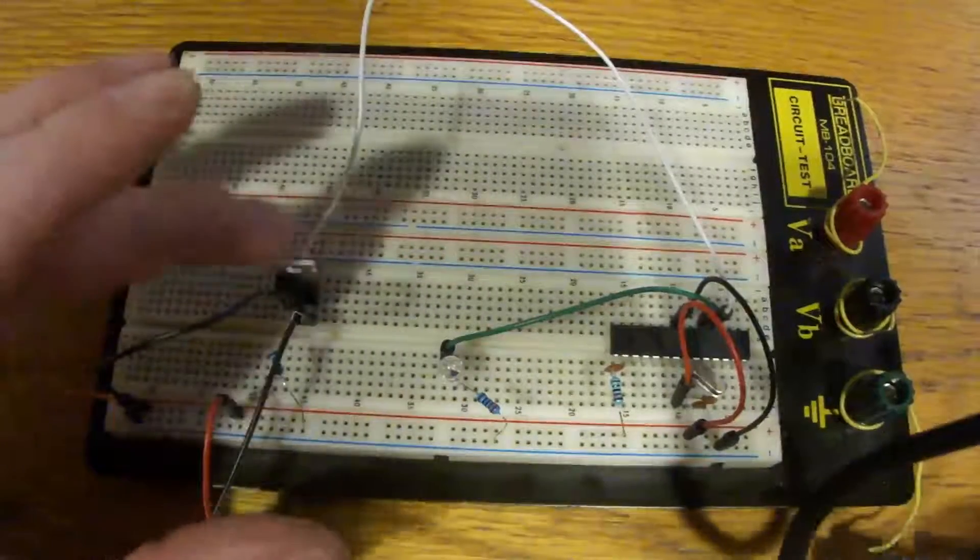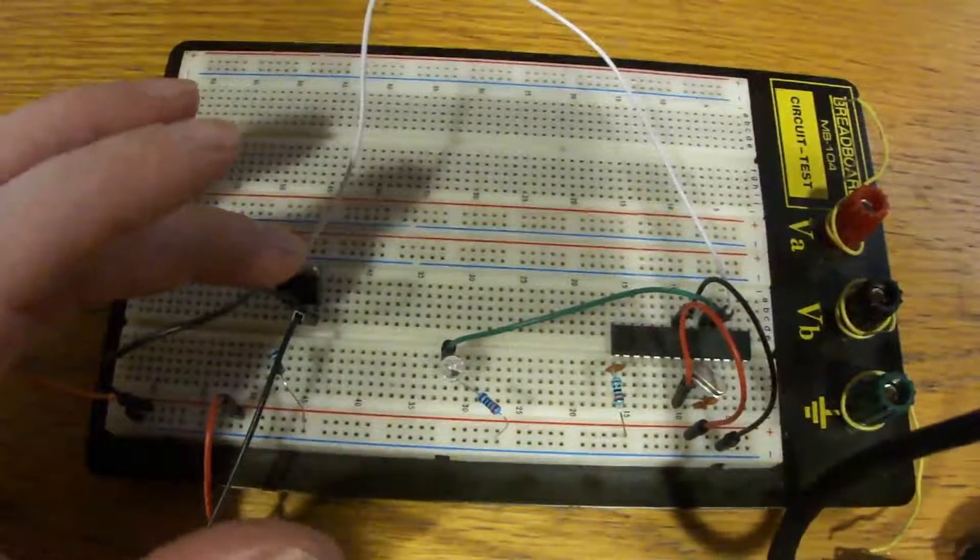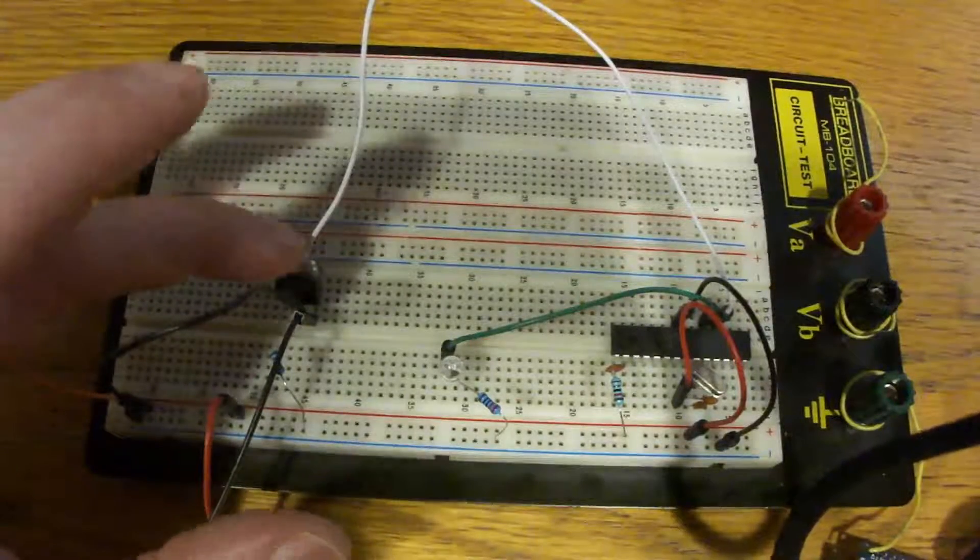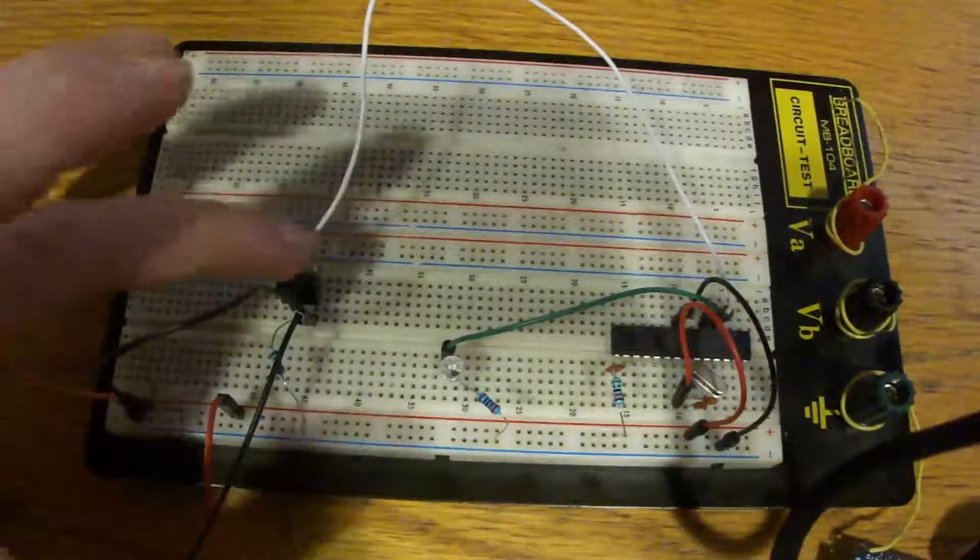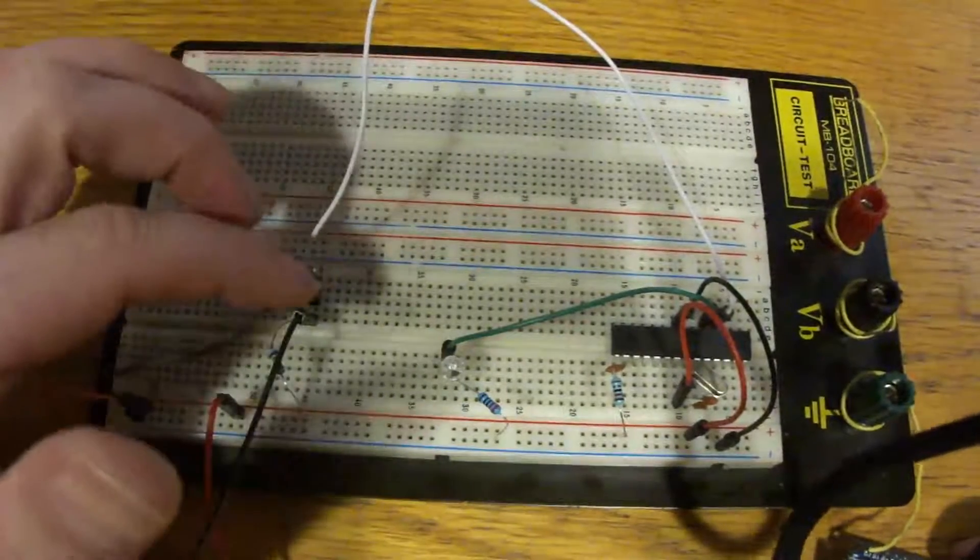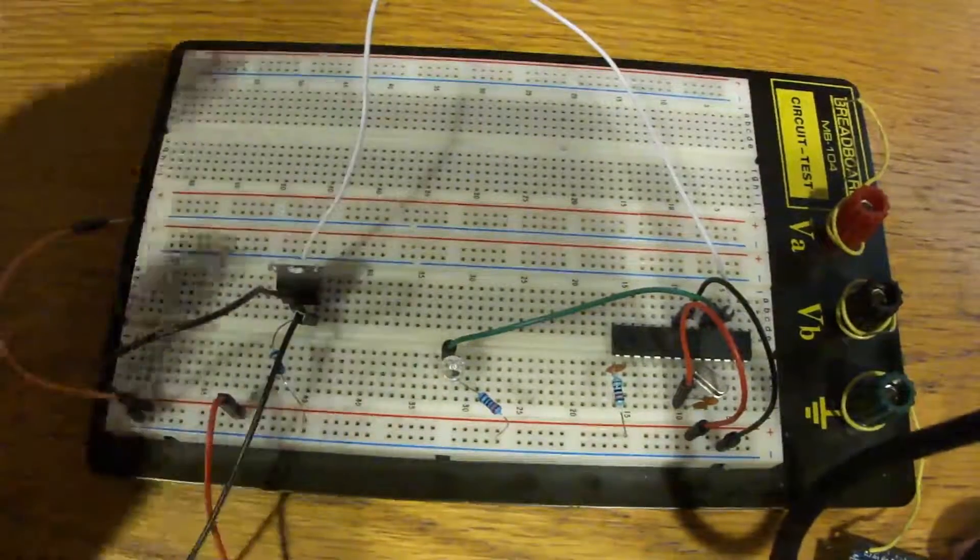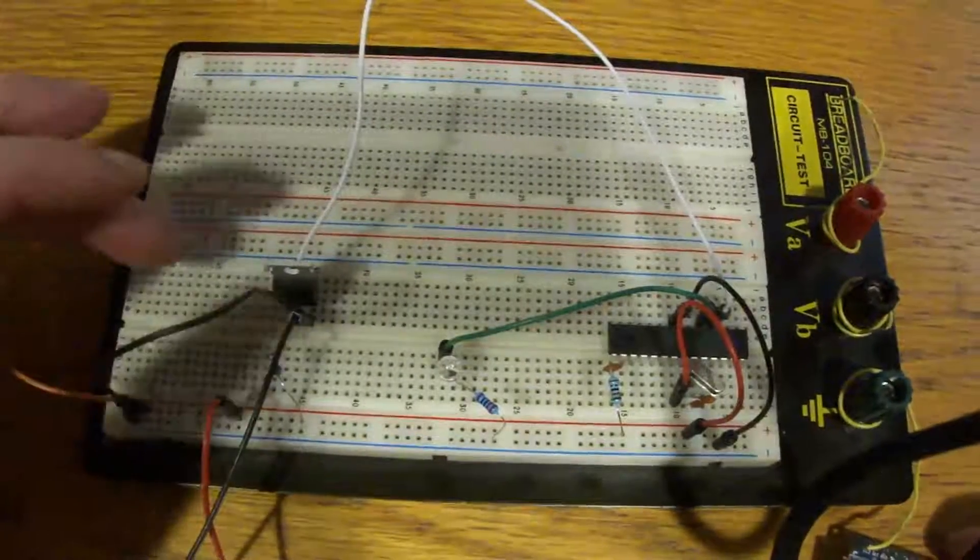And then over here is where it gets interesting. We've got a MOSFET. This is an FQP30N06L, I believe it is, but it's a MOSFET. Most MOSFETs work the same way. This is a logic-level MOSFET, so it's happy to work with an Arduino.